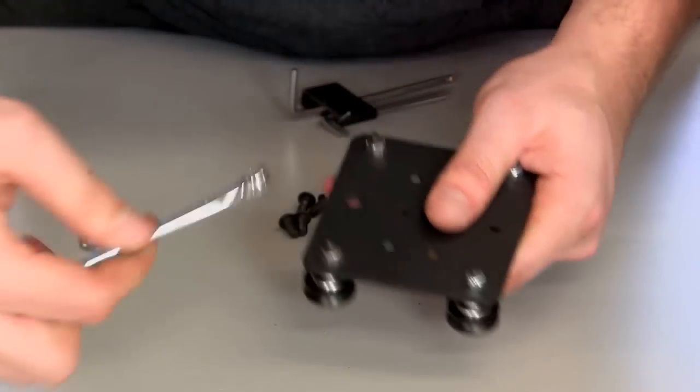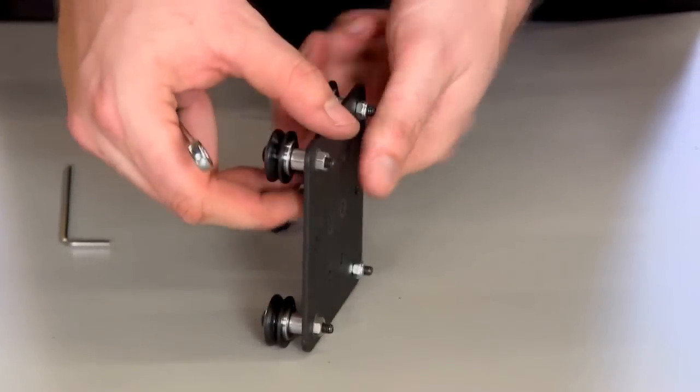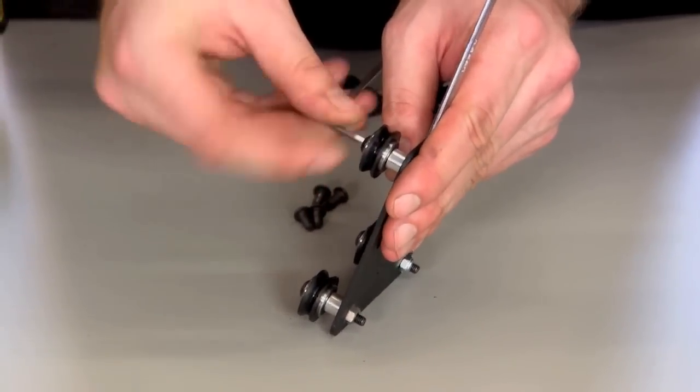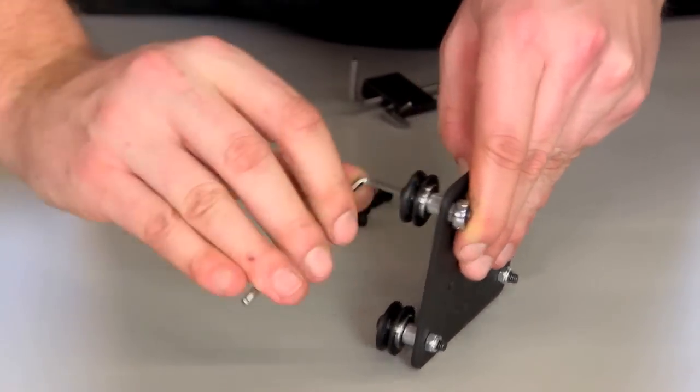Then position the eccentric nuts so that the screw captured by them is as far from the V-wheel with the nylock nut as possible. This opens the gap between the V-wheels, making it easier to slide onto the Z-axis maker slide.